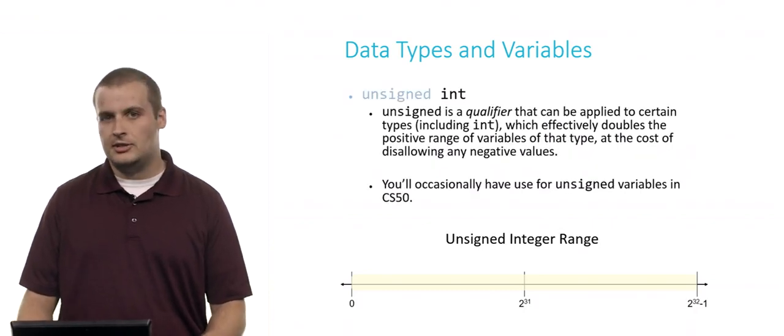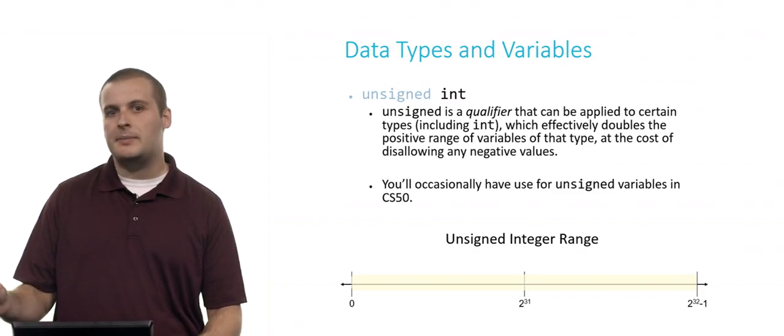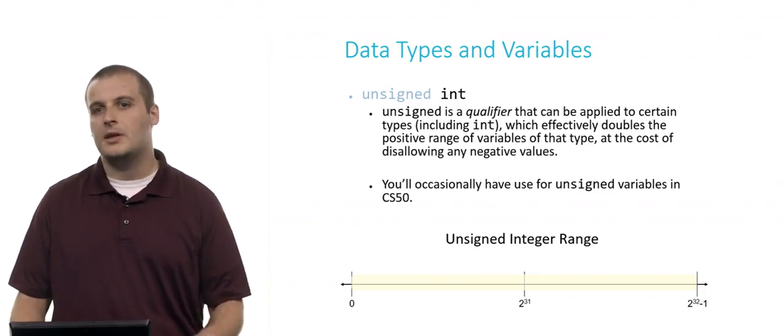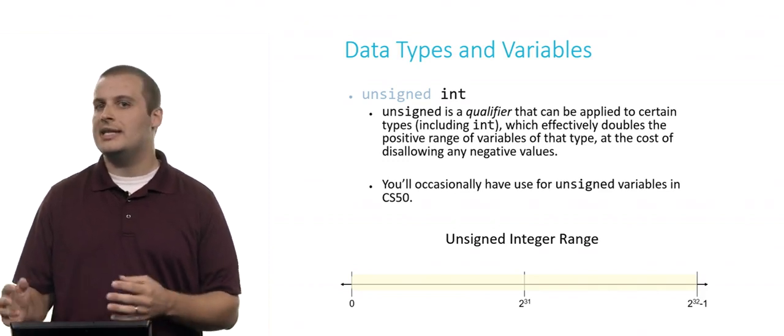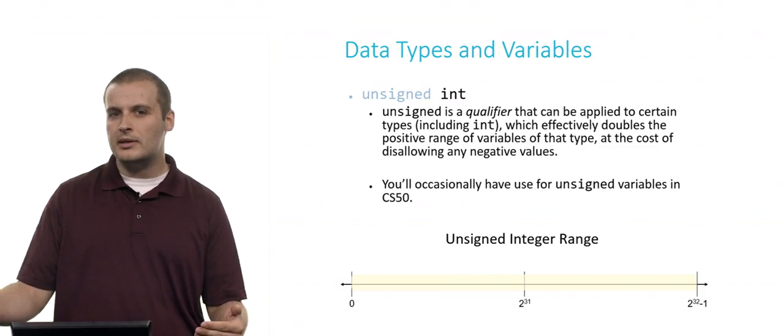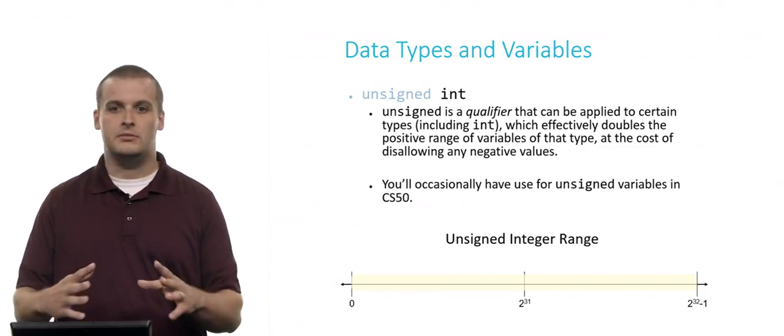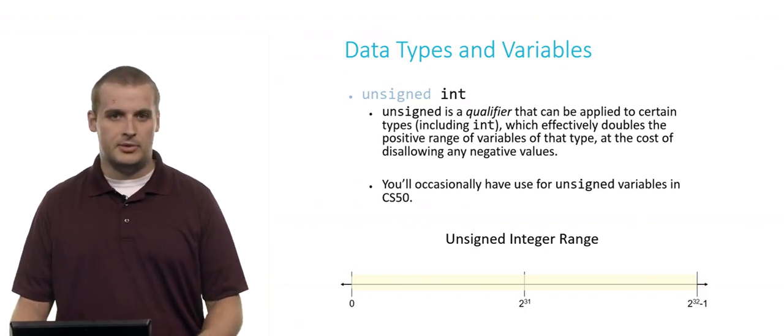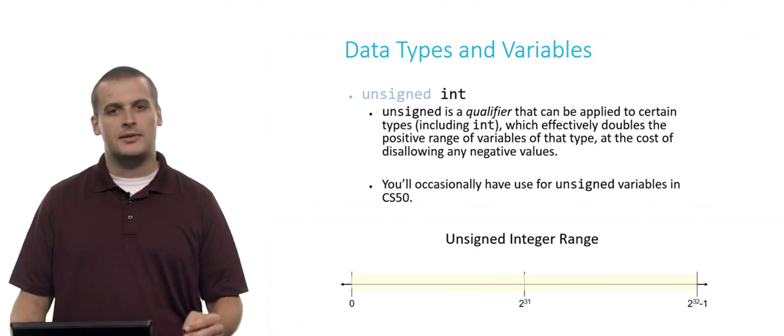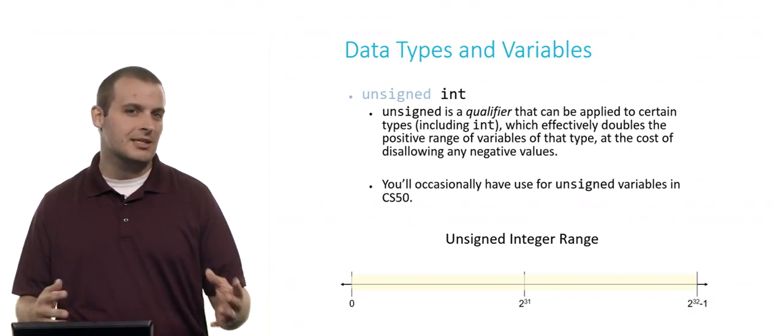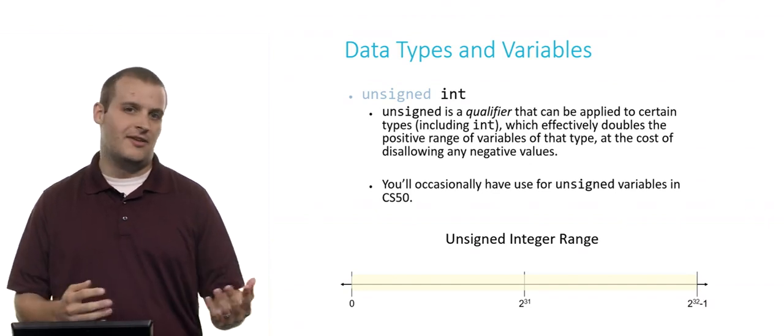Now, we also have something called an unsigned integer. Unsigned ints are not a separate type of variable. Rather, unsigned is what's called a qualifier. It modifies the data type of integer slightly. What it effectively does is doubles the positive range of values that an integer can take on at the expense of no longer allowing you to take on negative values. So if you have numbers that you know will get higher than 2 billion, but less than 4 billion, you might want to use an unsigned int if you know your value will never be negative. The range of values that you can represent with an unsigned integer are 0 to 2 to the 32nd power minus 1, or approximately 0 to 4 billion. So you've effectively doubled the positive range that you can fit, but you've given up all of the negative values.